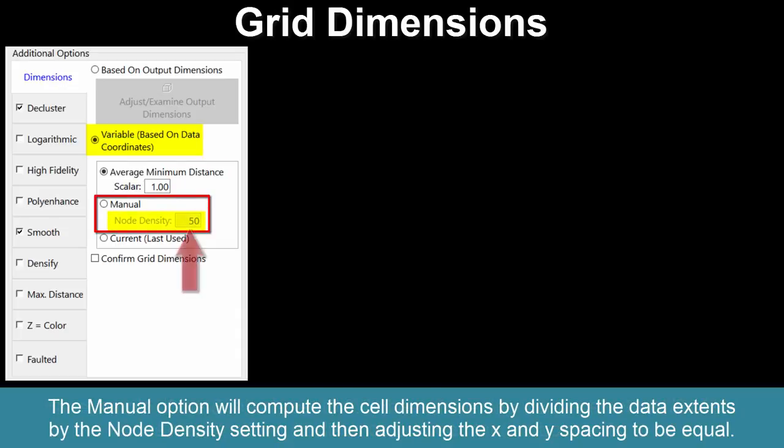The Manual option will compute the cell dimensions by dividing the data extents by the Node Density setting and then adjusting the X and Y spacing to be equal.